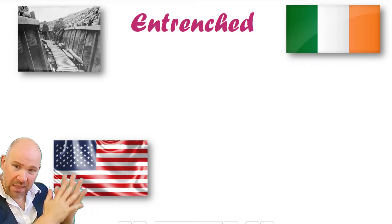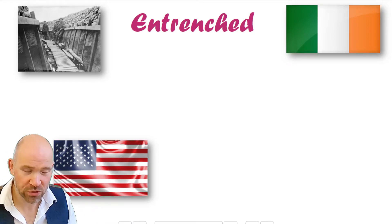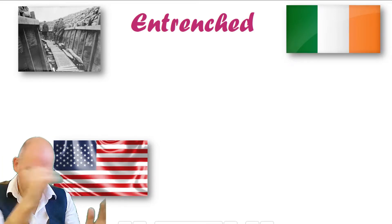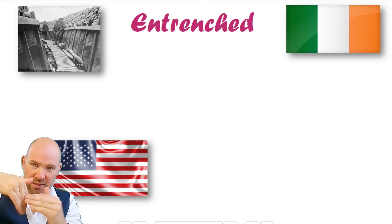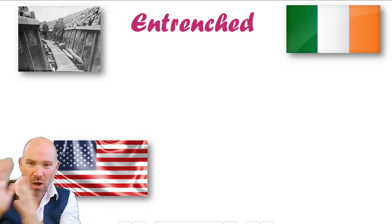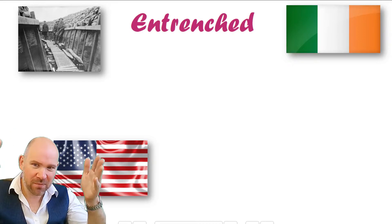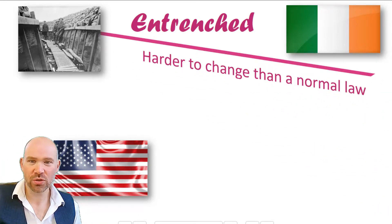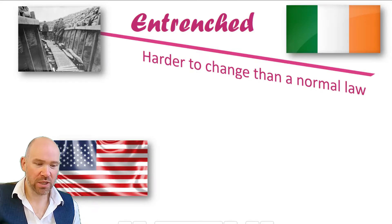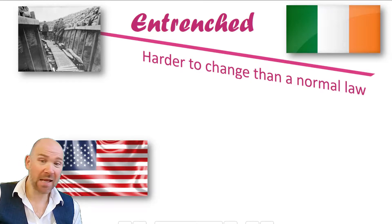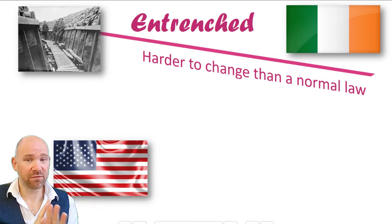Now the second word: entrenched. Often if something's codified it's also going to be entrenched, and if it's not codified it won't be entrenched — they tend to go in pairs, though the meanings are different. The American and Irish constitutions are both entrenched. The word 'entrenched' links to World War One trenches — when armies dug trenches to make their position stick, to make sure they couldn't be pushed out. So to use a colloquial term, an entrenched constitution is jammed in. An entrenched constitution is deliberately a lot harder to change than a normal law.